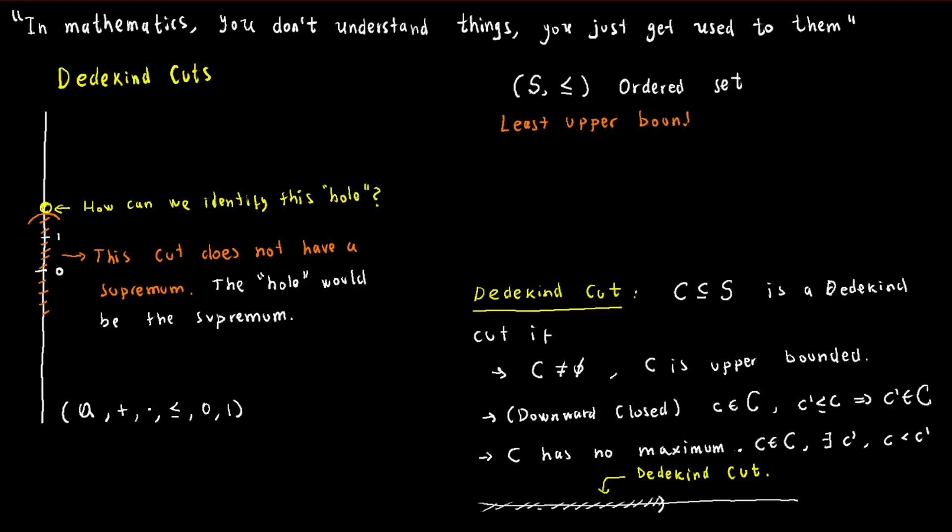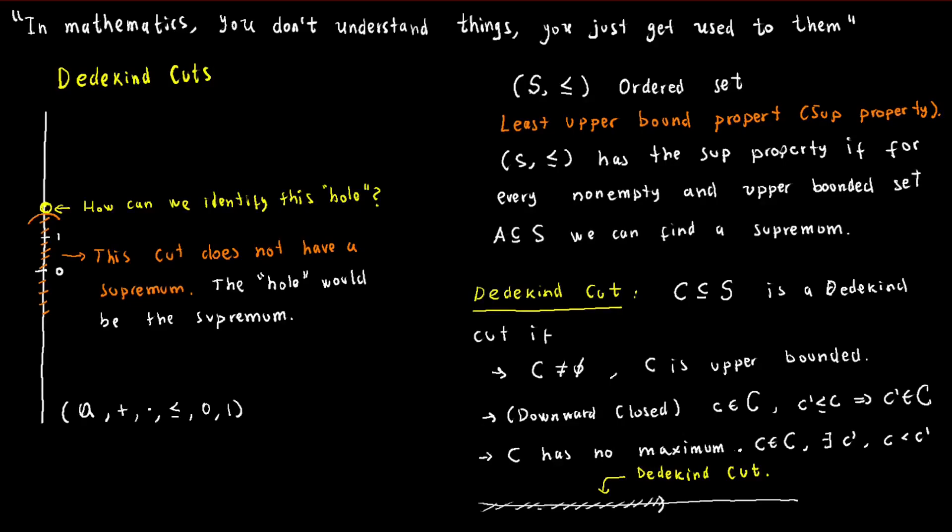An ordered set is said to have the supremum property or the least upper bound property if every non-empty upper bounded set has a supremum. In other words, if we take any subset of an ordered set that has an upper bound, then it must have a least upper bound as well.